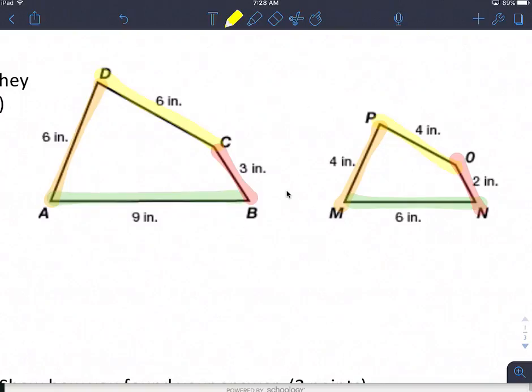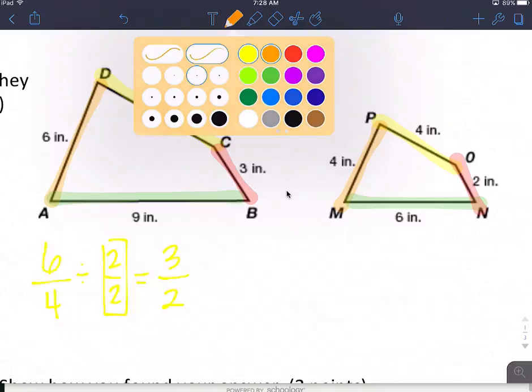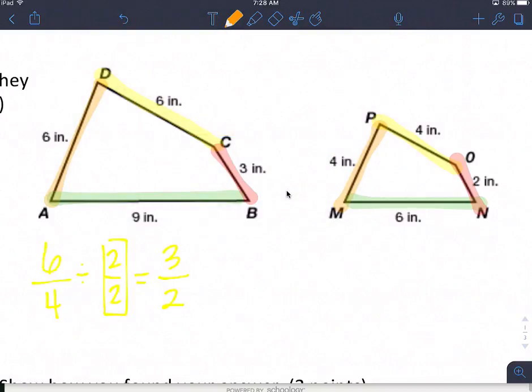Okay, so the first one, I'm going to go new on top, old on the bottom. So we have 6 to 4, and we can simplify by dividing by 2, and I get 3 over 2. Our next side is also 6 to 4, and that's also going to be 3 over 2.